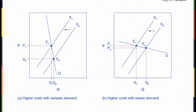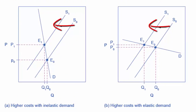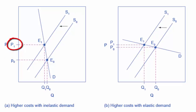A higher cost, like a higher tax on cigarette companies from the example in the text, leads supply to shift to the left. This shift is identical in both of the graphs shown. However, in the graph on the left, where demand is inelastic, the cost increase can largely be passed along to consumers in the form of higher prices without much of a decline in equilibrium quantity.